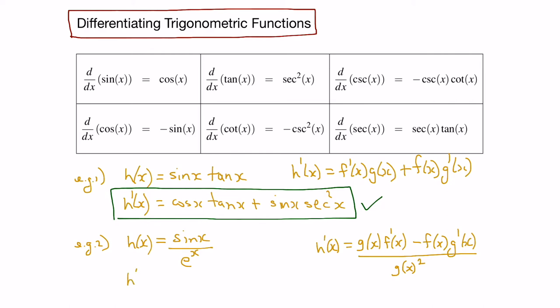So h prime of x here would be the bottom function e to the x, times the derivative of the top function — the derivative of sine is cosine, so we put cos x there — minus the top function sine x times the derivative of the bottom function. The derivative of e to the x is itself, e to the x, all divided by the bottom function squared, so e to the x all squared.